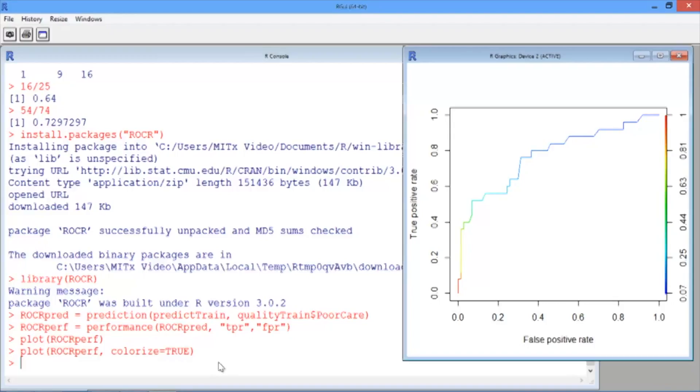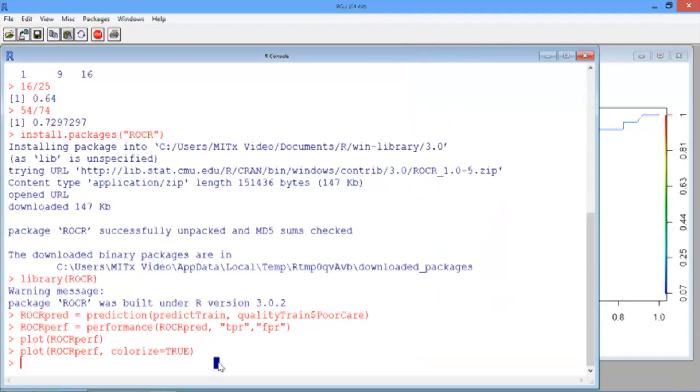Now finally, let's add the threshold labels to our plot. Back in your R console, hit the up arrow again to get the plot function. And after colorize equals TRUE, we'll add two more arguments. The first is print.cutoffs.at equals seq, and then in parentheses (0, 1, 0.1).